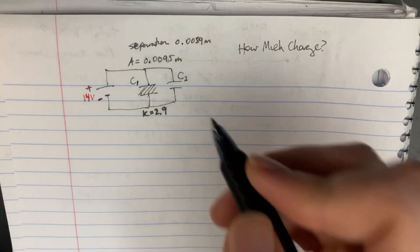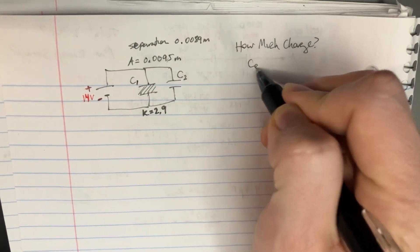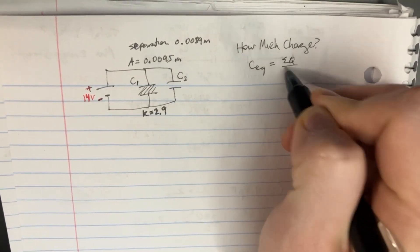In this question, we're asked to find the total amount of charge on the parallel plate capacitors, knowing that C_eq is equal to total Q over V.